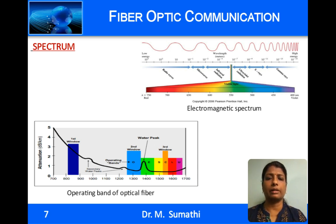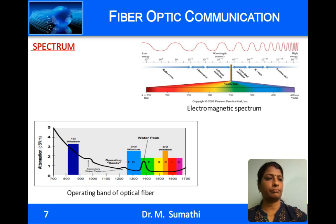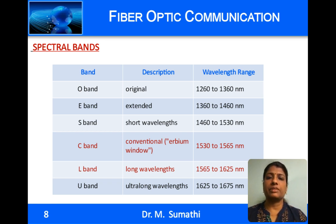Therefore, fibers with low water content are used in the E band. Then there is the short wavelength band, followed by the conventional or C band centered at around 1550 nanometers where WDM technologies are used, then the long wavelength band and the ultra long wavelength band. This table gives the various bands ranging from the O band to the U band, their descriptions, and the wavelength ranges.